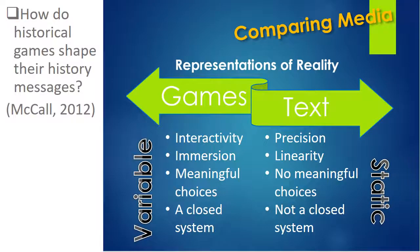Since different media shape their messages differently, it's worthwhile to consider some differences between video games and static text as distinct media for doing history. I pick static text because that's the medium most commonly thought of as the default for history. Some would even argue it's the proper medium, though I wouldn't be one of them. Video games as a medium are characterized by their variability — they are interactive, allowing players to make meaningful decisions, with varied outcomes as a result. Video games also form closed dynamic systems except for player input; the elements must connect together into a greater working system or the game simply will not be playable. Text, on the other hand, is precise and linear — it does not offer the reader any meaningful choices, and text is also not a closed dynamic system. If the author chooses to ignore some aspect of the past, the text can still be readable as a whole and purposeful.